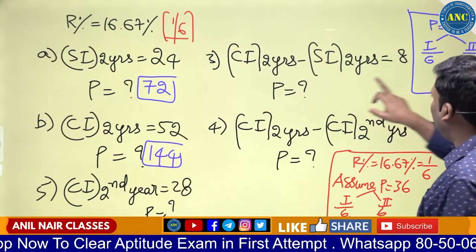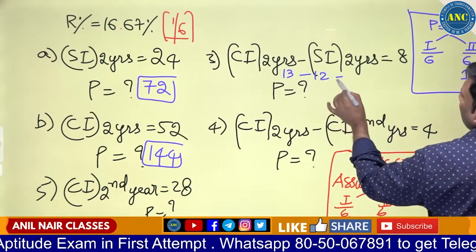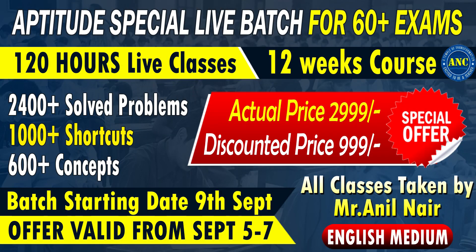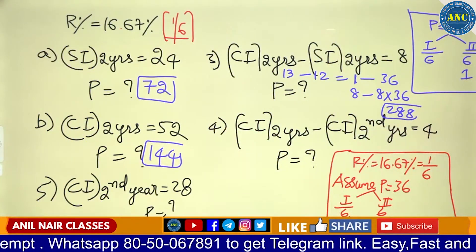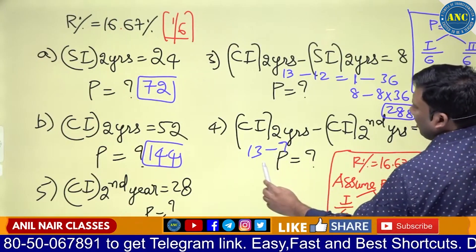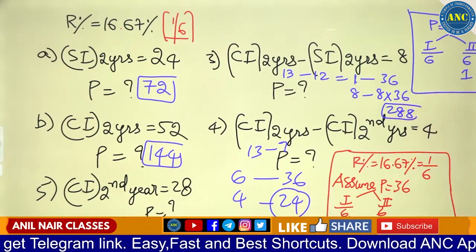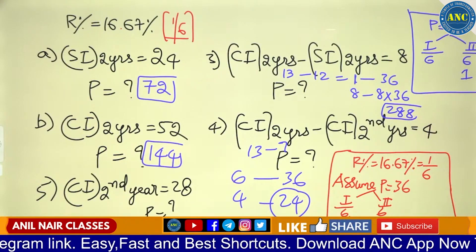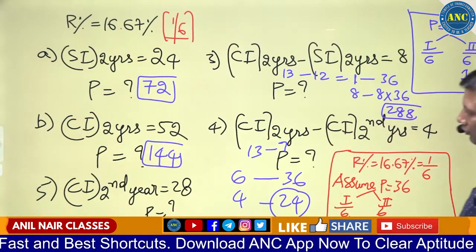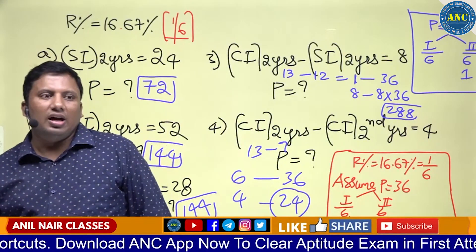Third sub-question: CI for 2 years is 13, SI for 2 years is 12, difference is 1. This difference of 1 corresponds to principal 36. If the answer is 8, then 8 times 36 equals 288. For CI second year equals 7 (which is 6 plus 1): 7 gives 28, so 28 divided by 7 times 36 gives principal 144.